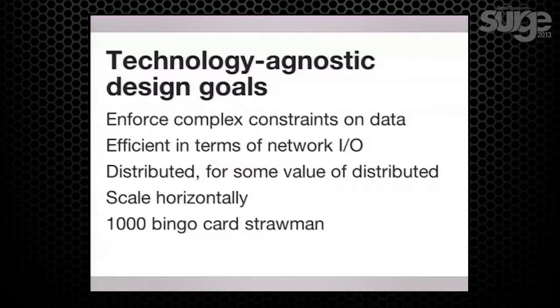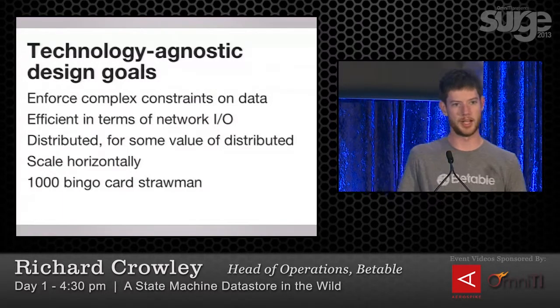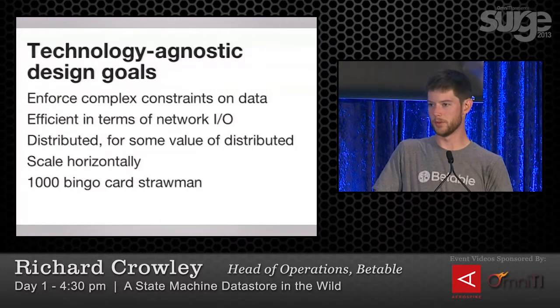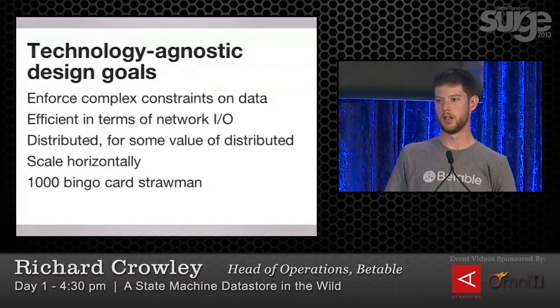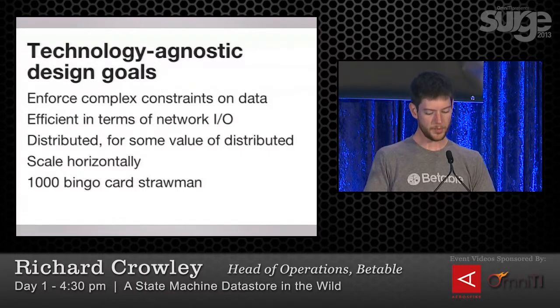Back to design goals — which play no part in which particular technologies we use. We have some high-level constraints we want to enforce on data, and they're not known ahead of time because they're dependent on the particular game being implemented. We want to be efficient in terms of network I/O — what we measured is that we could only do on the order of 50-100 things per second while enforcing all these constraints, and that just wasn't efficient. We want to be distributed and scale out horizontally, accommodate growing traffic, and handle selling a thousand cards instantly while managing all our constraints.